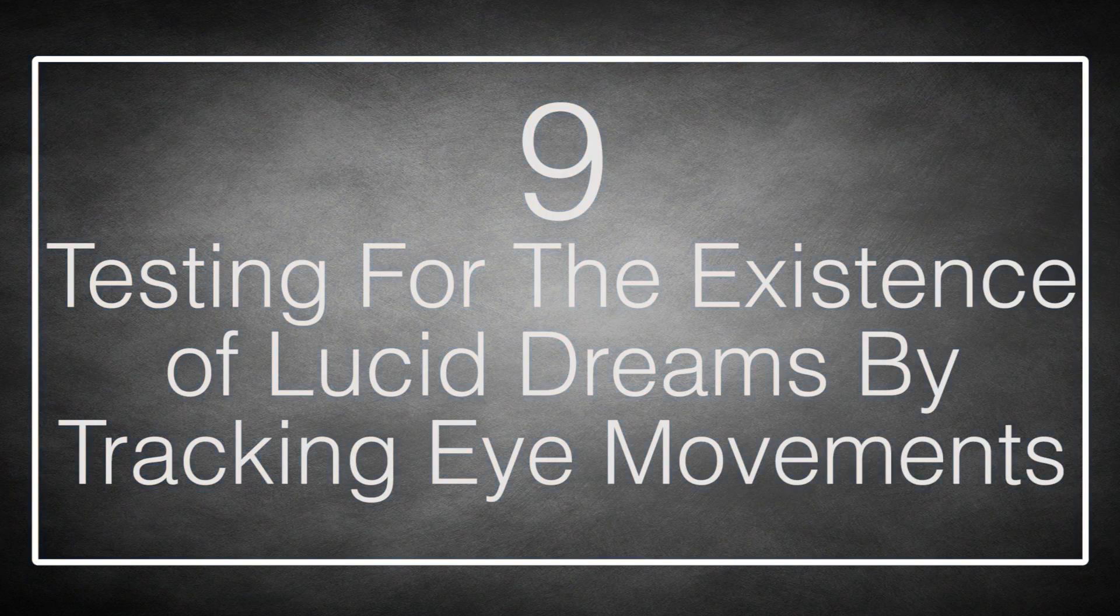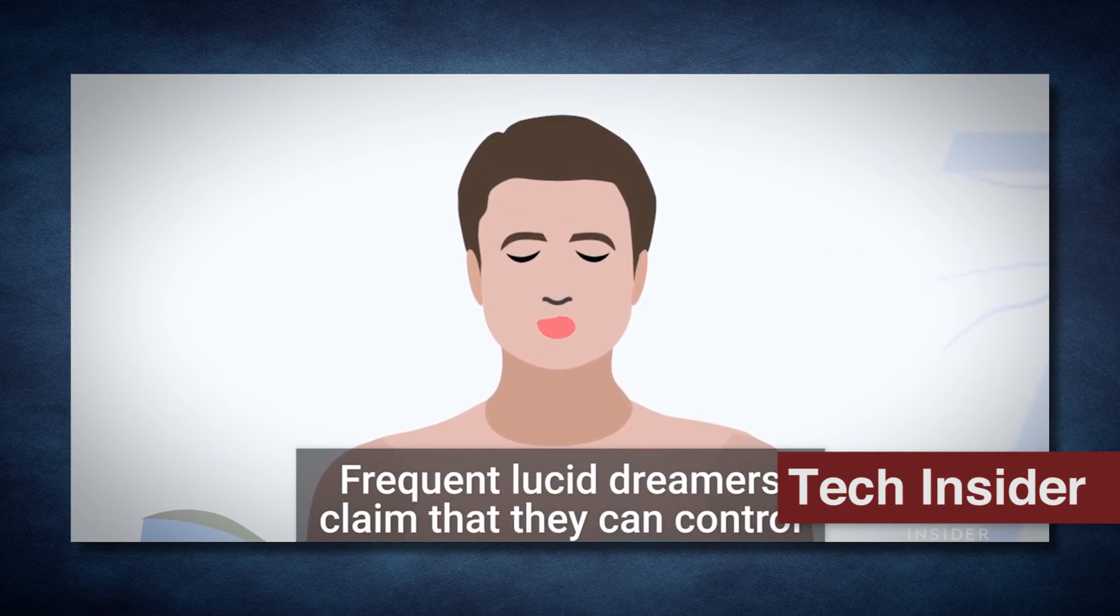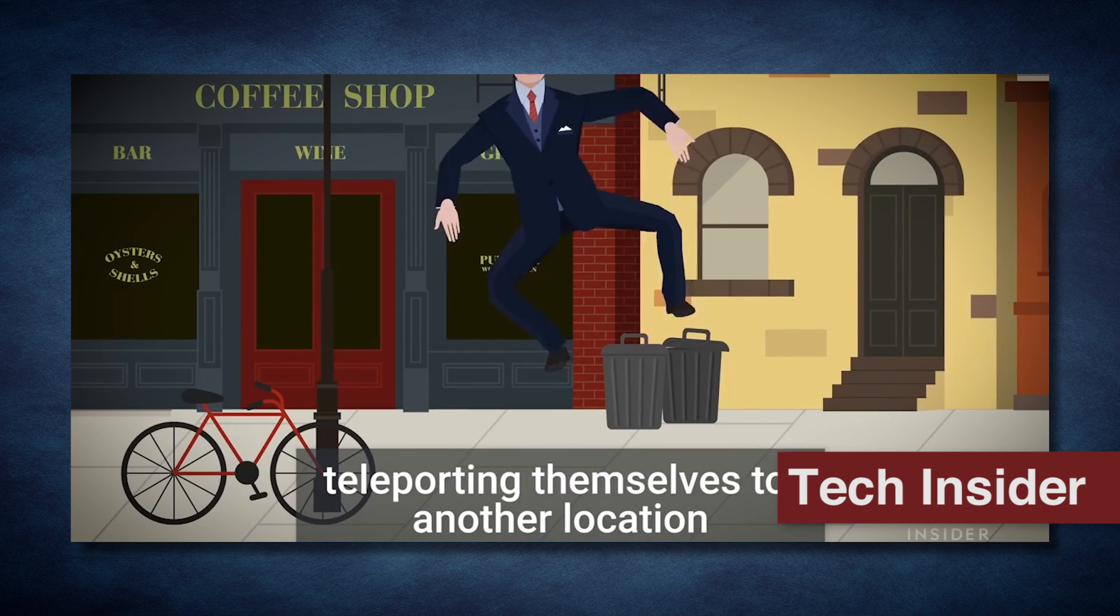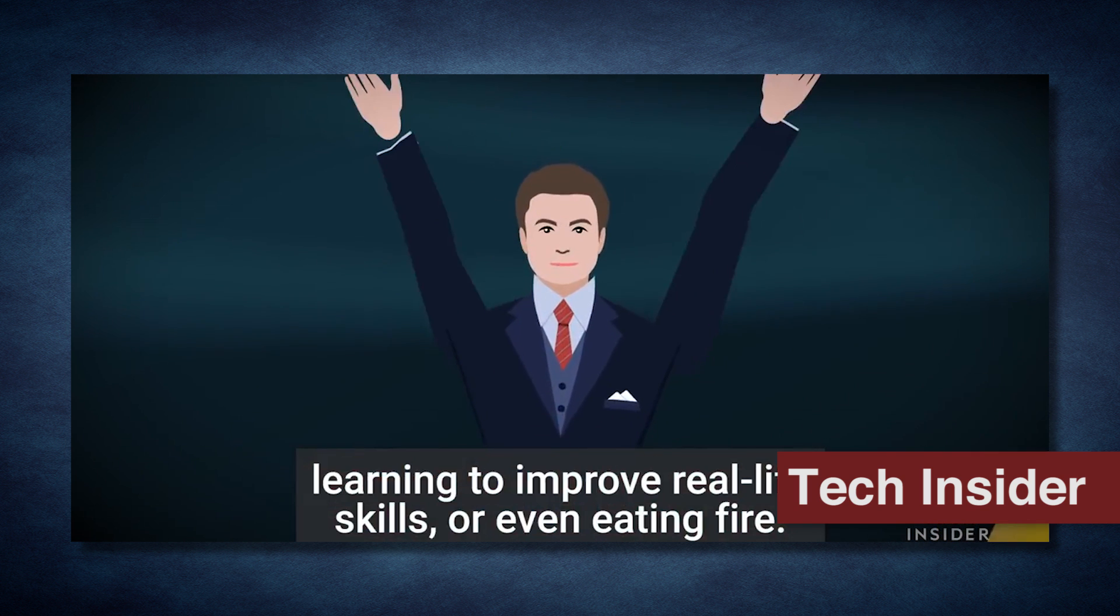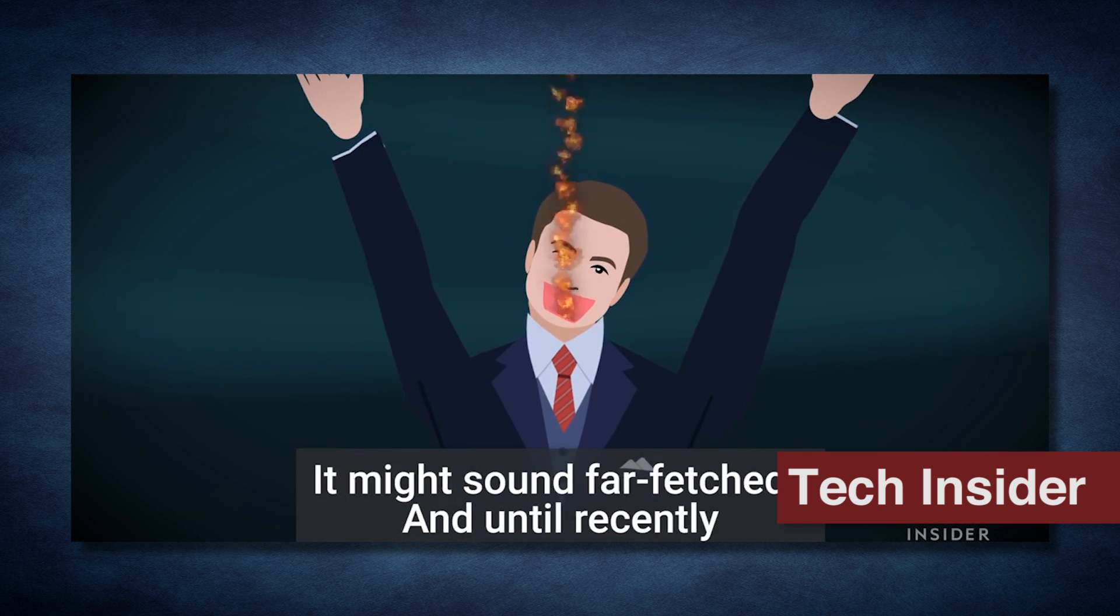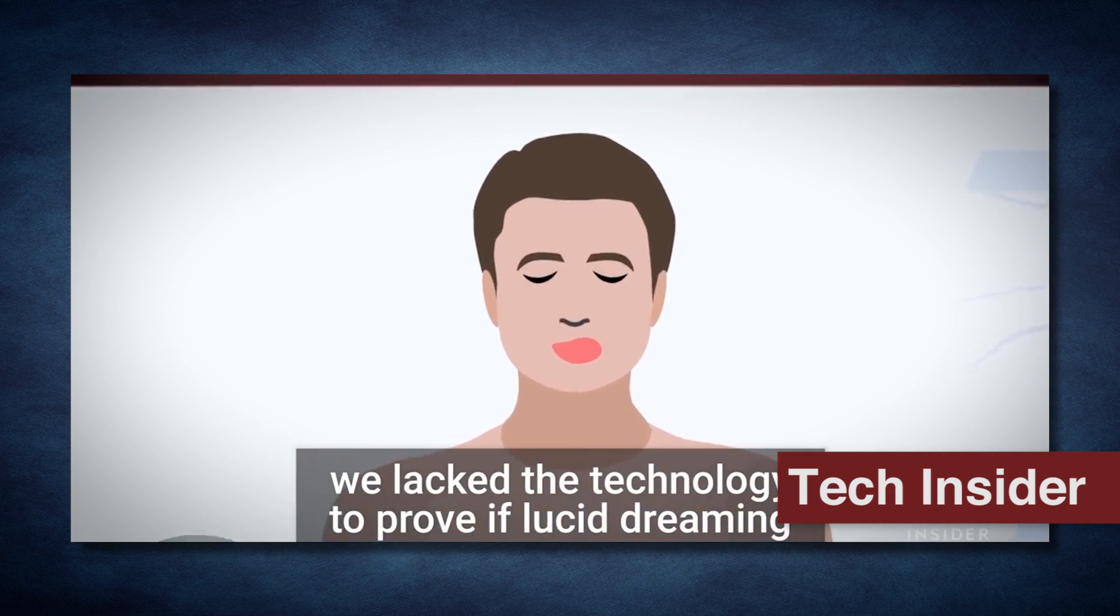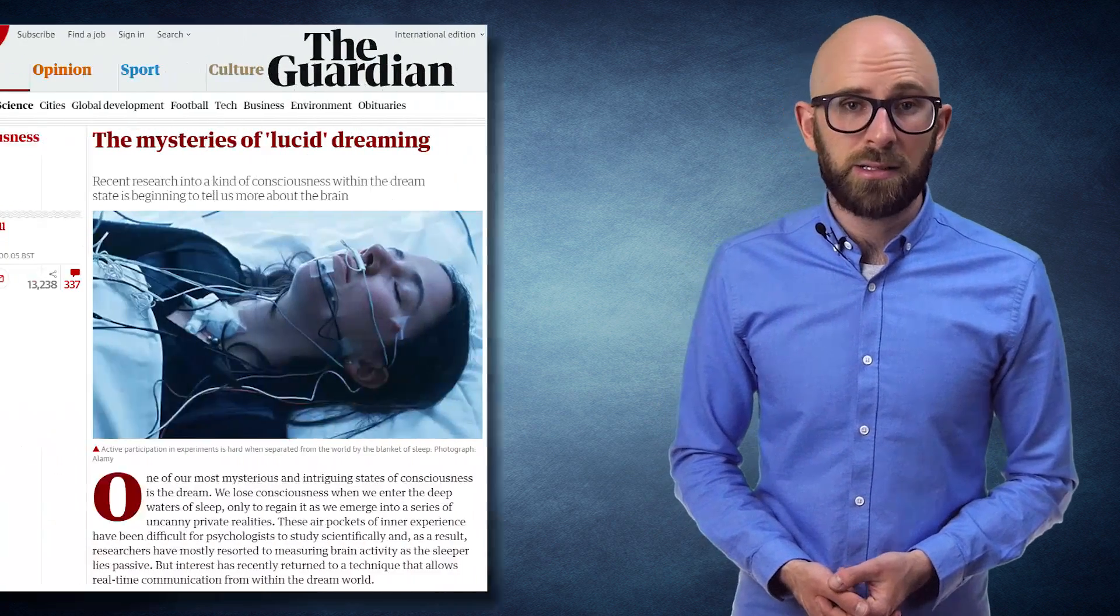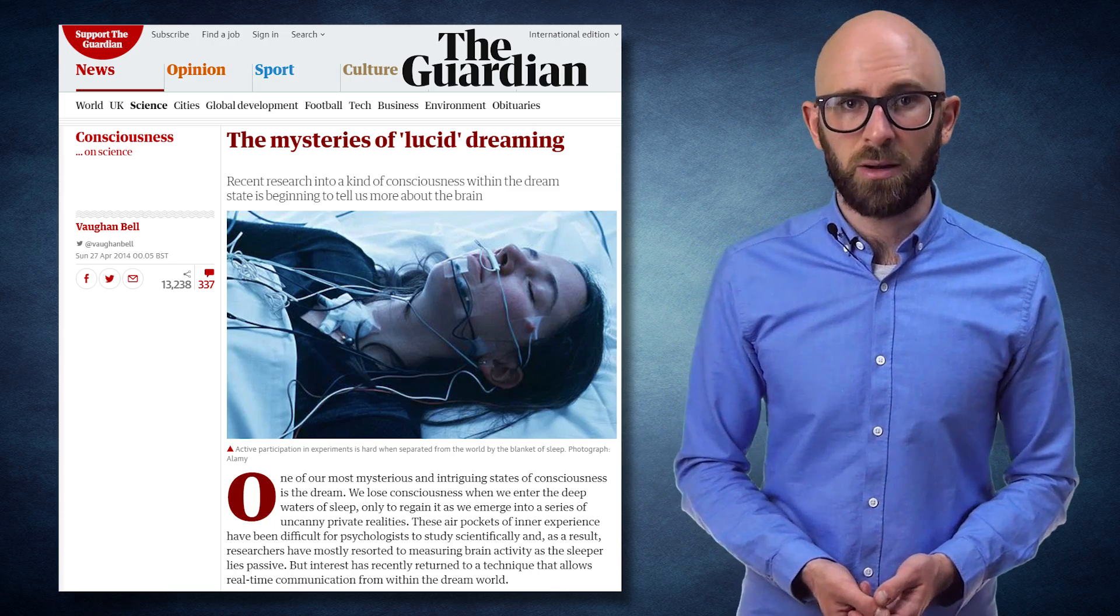Number 9: Testing for the existence of lucid dreams by tracking eye movements. Lucid dreams, for those who don't know, are when you are able to become aware in your dream and start actively influencing what is happening. These dreams are the greatest passion of dream enthusiasts everywhere, and there are entire communities built around exploring and sharing the best strategies. For the longest time, researchers have been skeptical if lucid dreaming is actually a real thing or just wishful thinking on the part of the dreamer.